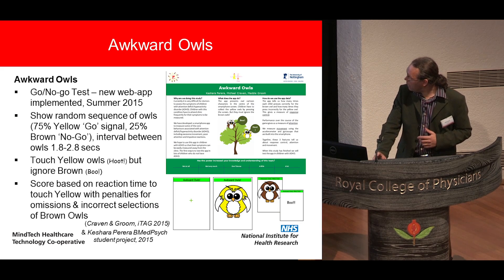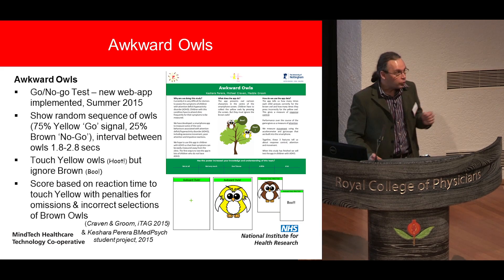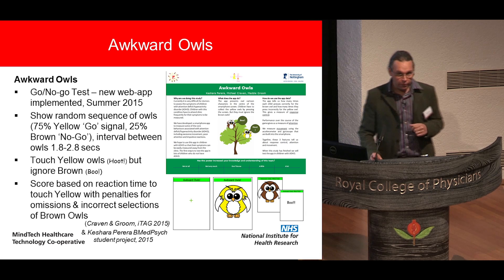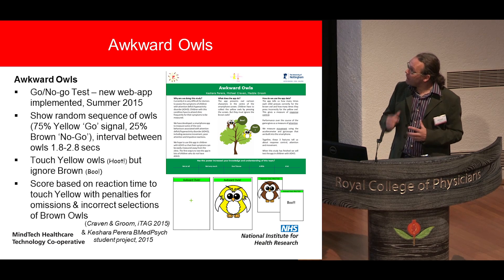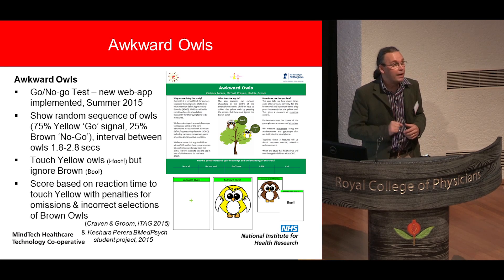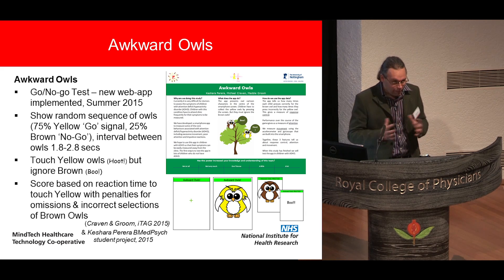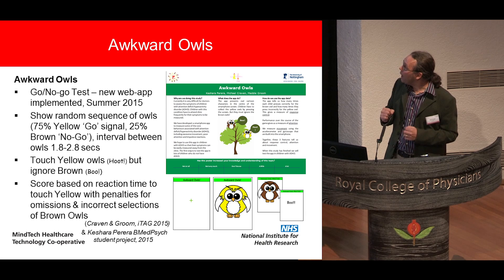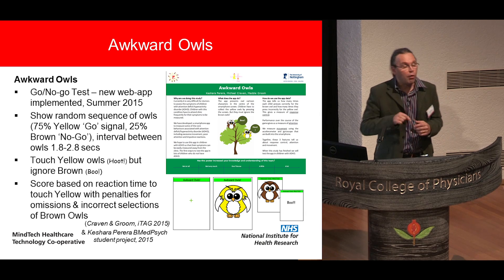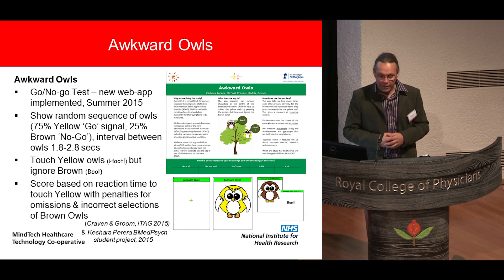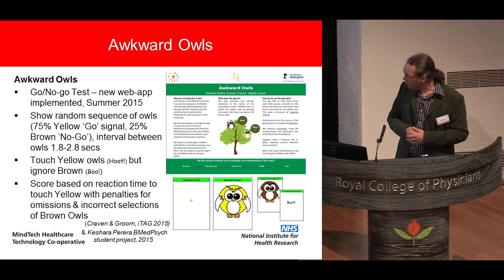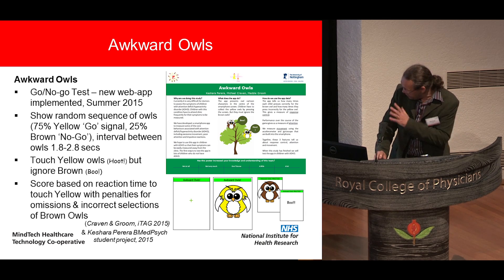Our most recent offering, called Awkward Owls, is a go/no-go test where children press on owls and try to spot yellow owls while ignoring the brown ones. Unlike the earlier test, you press more often, so we thought we'd get more intelligence about reaction time and reaction time variability. That's why we implemented this one.